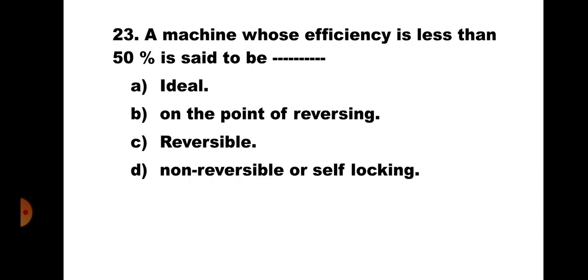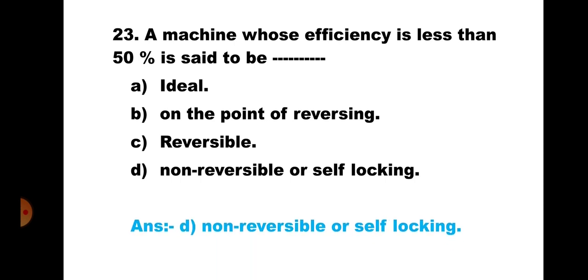Question number 23: A machine whose efficiency is less than 50% is said to be: A) ideal, B) on the point of reversing, C) reversible, D) non-reversible or self-locking. When efficiency is less than 50%, the machine is non-reversible or self-locking. The correct answer is D) non-reversible or self-locking.